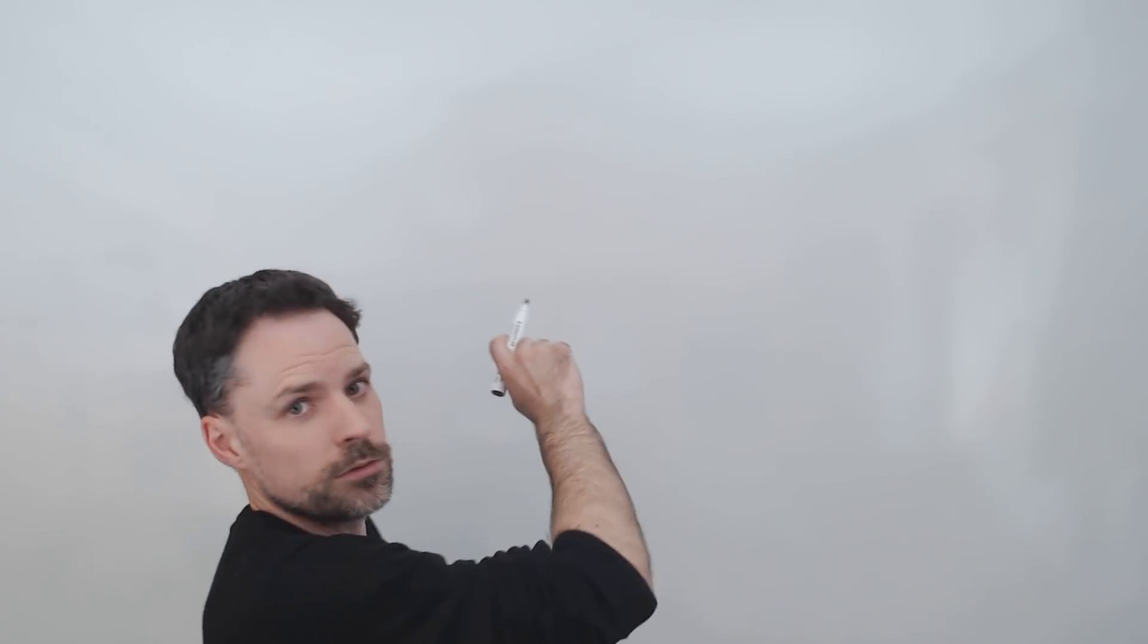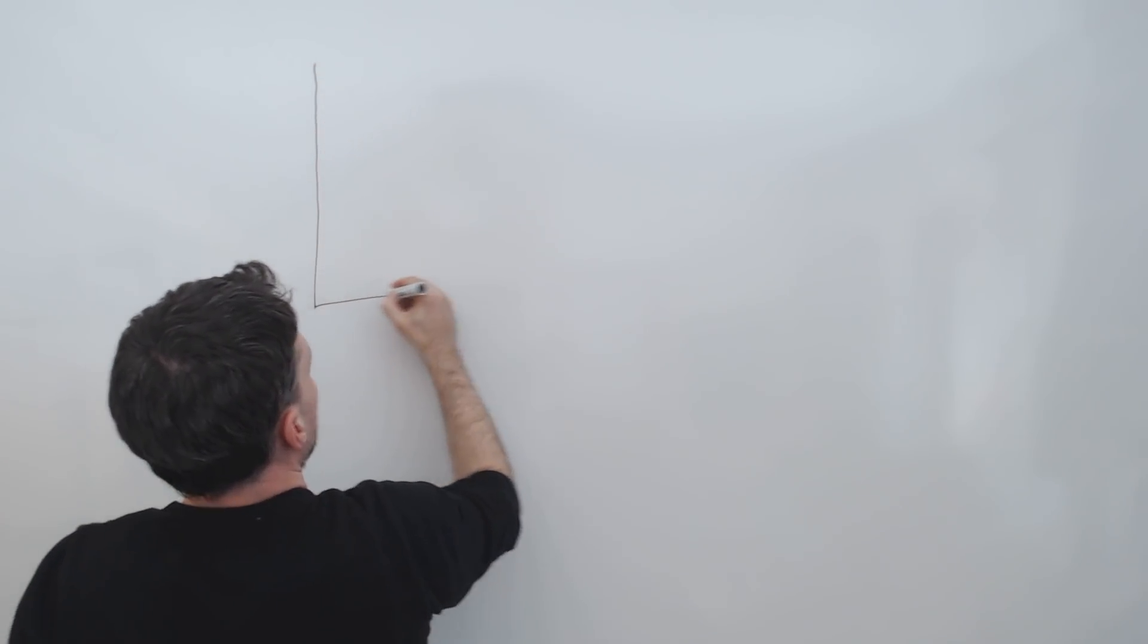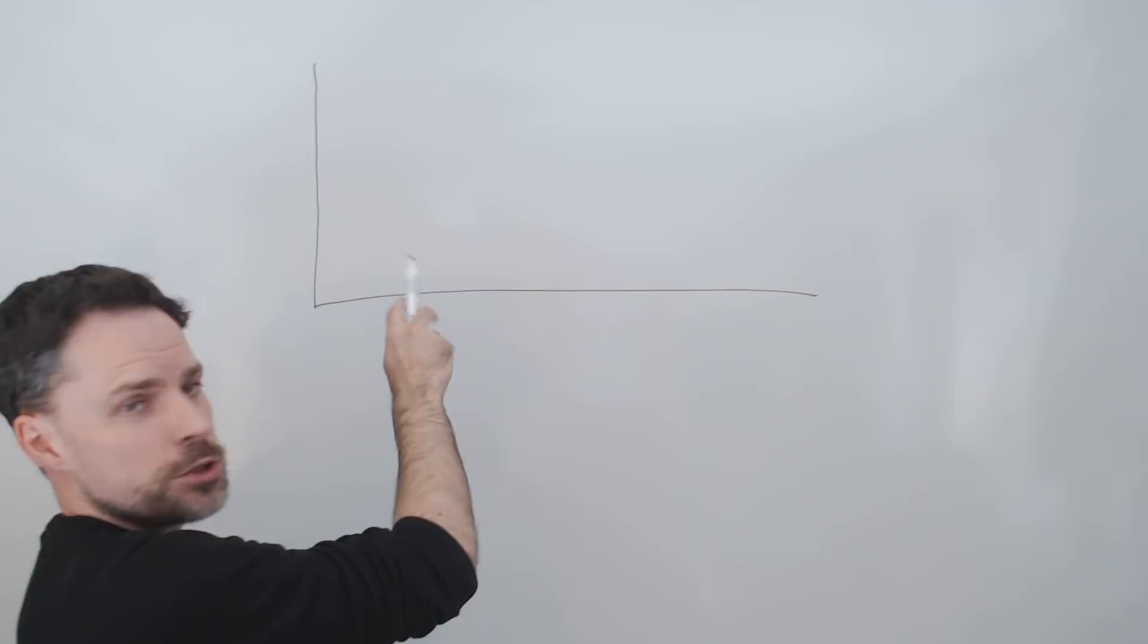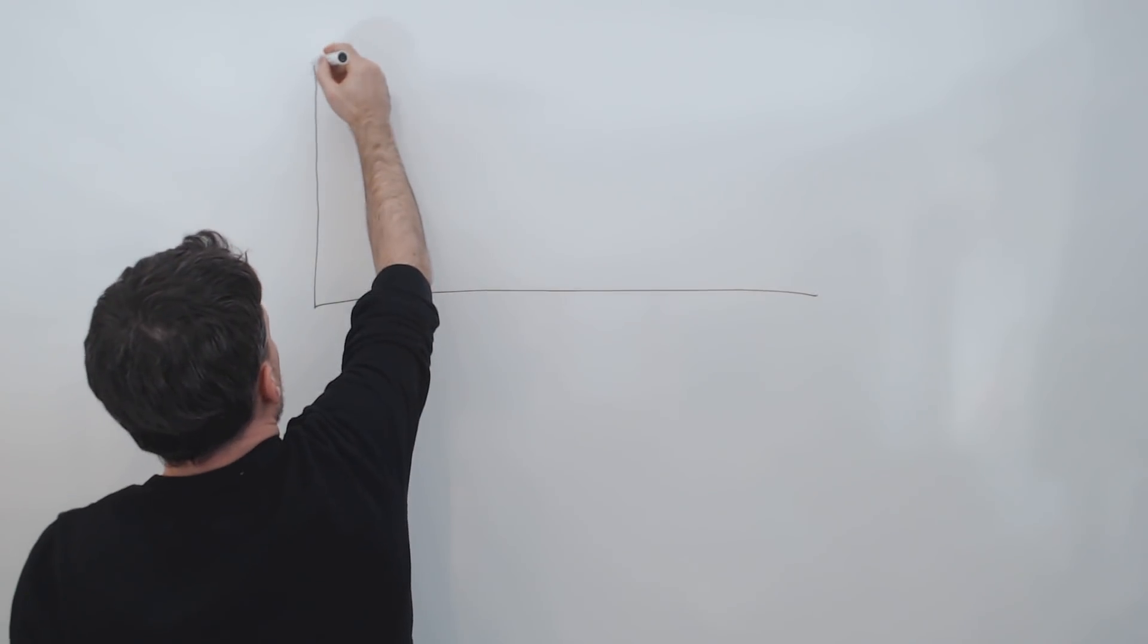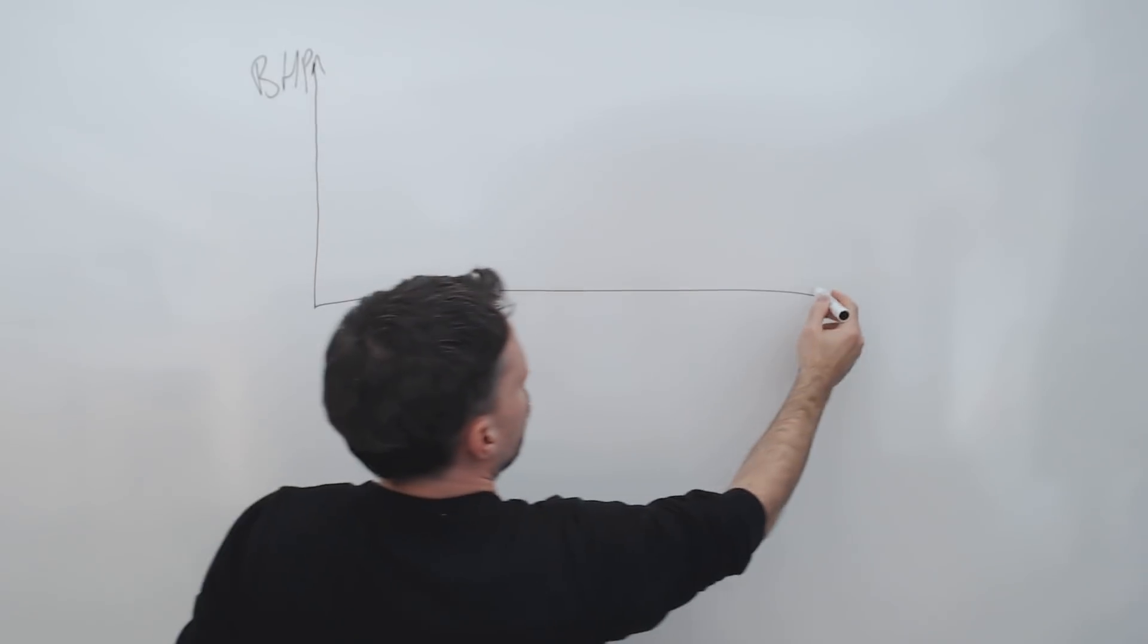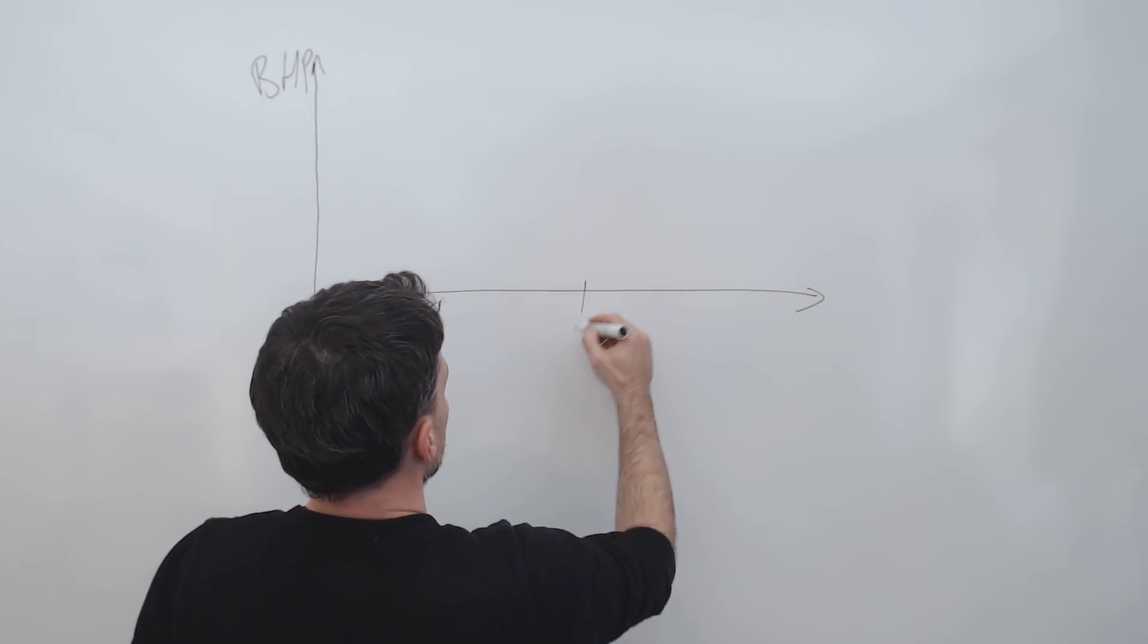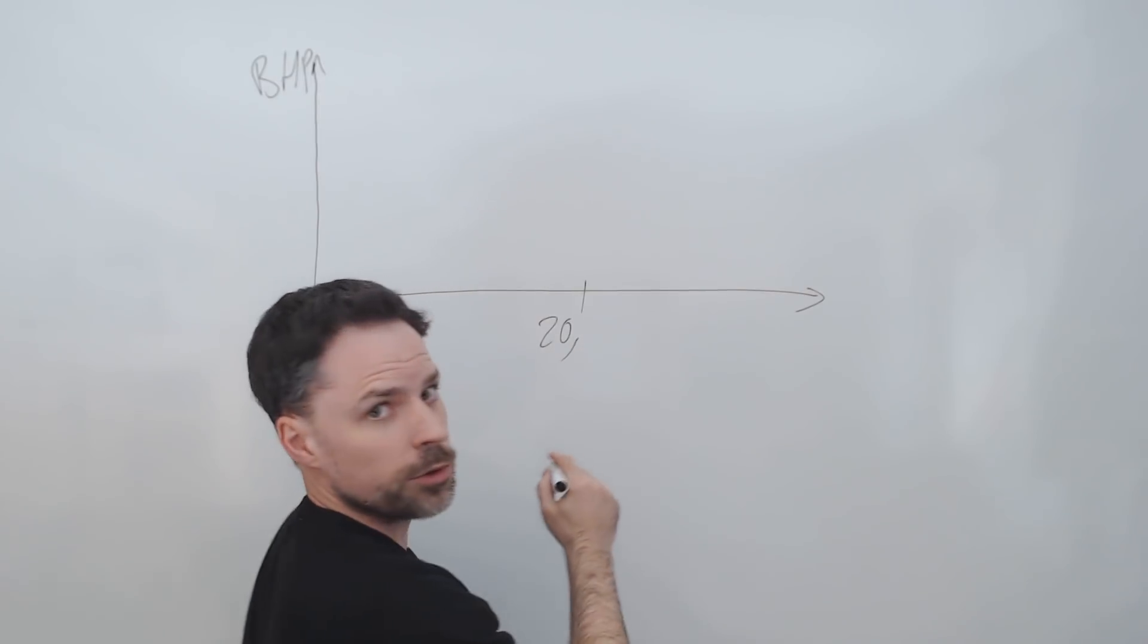So it's a pretty big problem. Basically, if we draw a couple of graphs, this one is going to be engine power and this is going to be altitude. So we'll call this 20,000 feet.